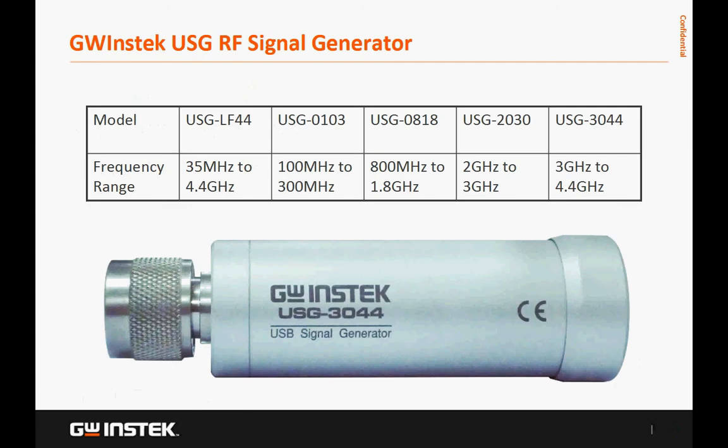GWNStack debuts the brand new USG Series RF Signal Generator, which comes with 5 models to meet user's requirements. It is a pocket-size, USB interface compatible RF signal generator with a frequency range from 35 MHz to 4.4 GHz — a valuable and economical choice to meet user's test requirements.